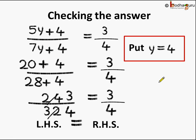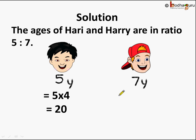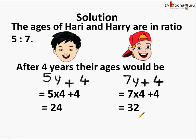But wait — we haven't yet arrived at the actual ages of Hari and Harry. So let's substitute the value. Hari's age is 5y, so 5 multiplied by 4 equals 20. Harry's age is 7y, so 7 multiplied by 4 equals 28. Their present ages are 20 and 28. Now, after 4 years: Hari's age is 5y plus 4, which is 20 plus 4 equals 24. Harry's age is 7y plus 4, which is 28 plus 4 equals 32.